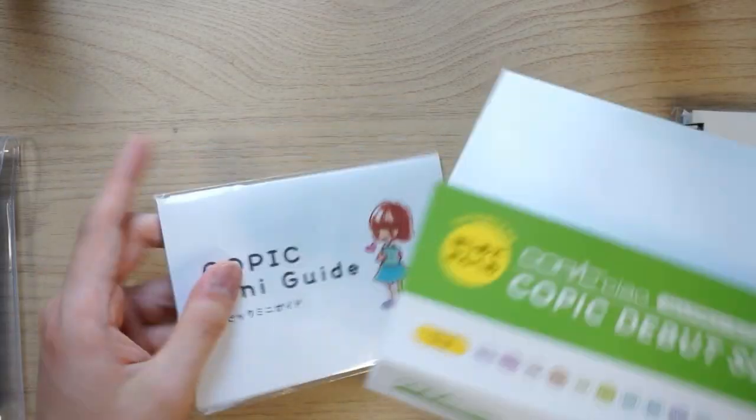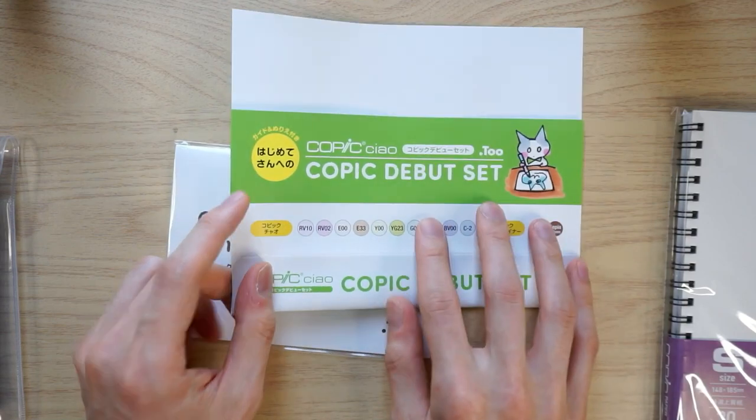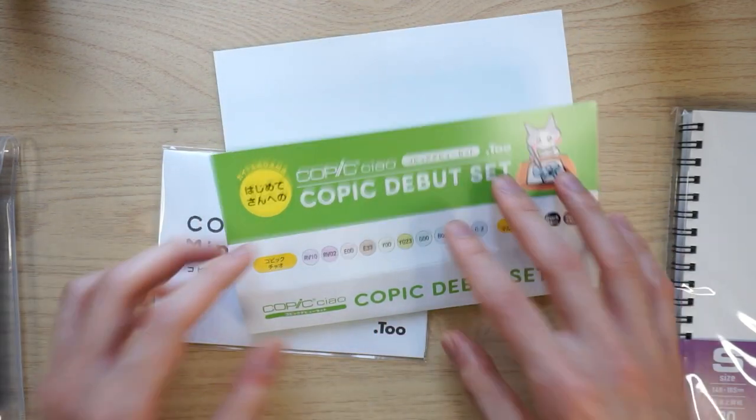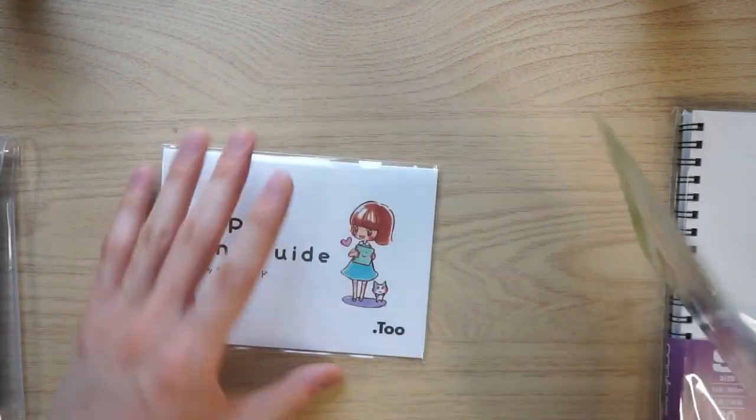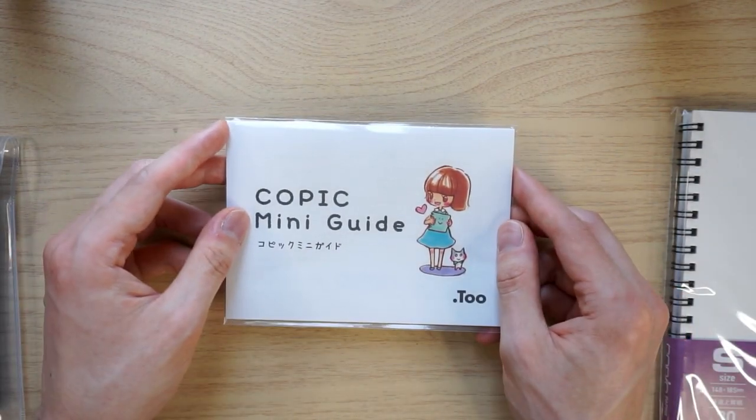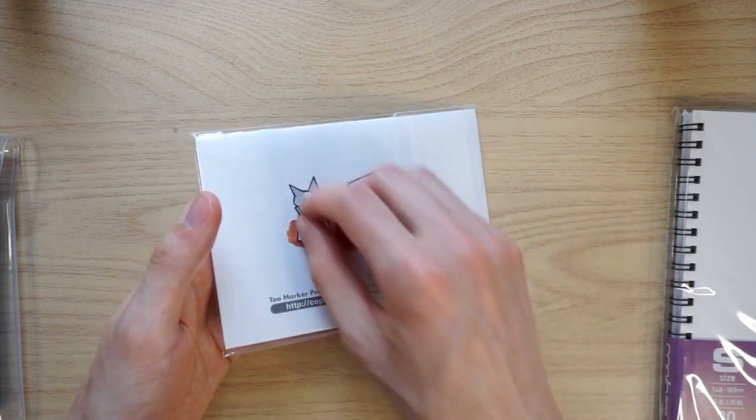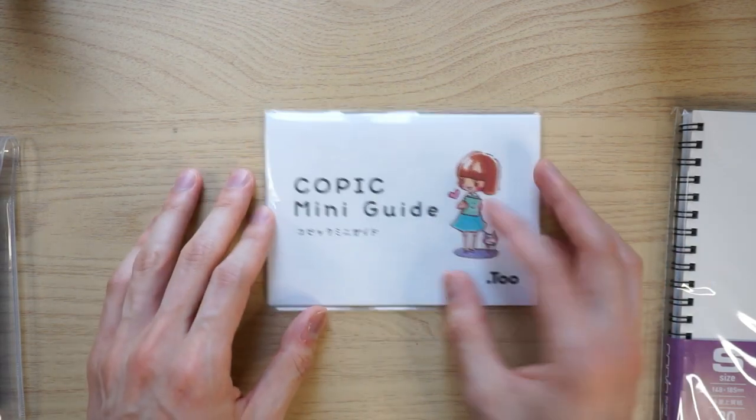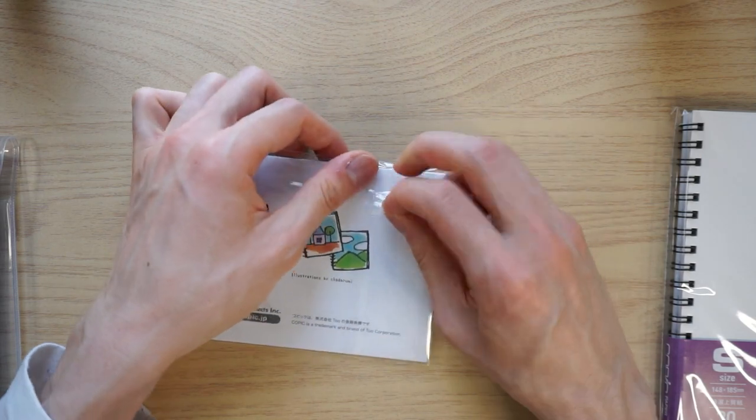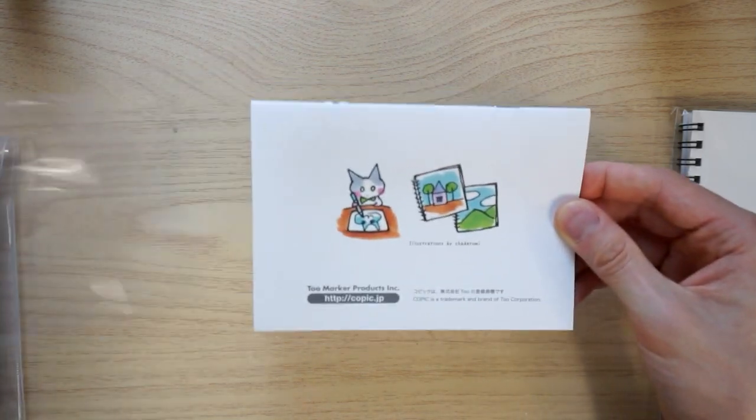This mini guide is included because this is a set aimed at beginners. So a lot of the Copic pen sets that include like 12 pens or 24 pens or 48 pens, they probably don't have these little guides in them. But because this is squarely aimed at beginners, they're going to give you some example art that you can actually jump straight into coloring in so that you don't have to be an amazing artist. You can already have some pictures to color in. And who knows, maybe you don't want to be an illustrator. Maybe you just want to be like a colorist. Take it out of the packaging.